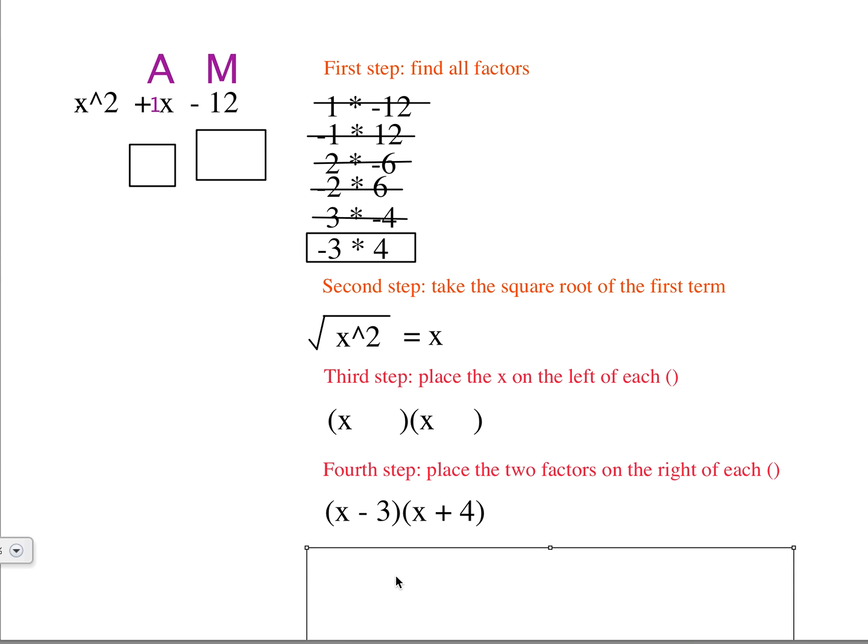So I'm going to place that right there, and that's your answer. So you have x minus 3 times x plus 4, and then you're probably wondering, well how do I check my work to make sure I have the correct answer?